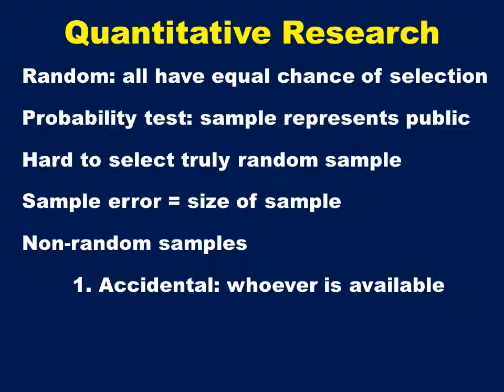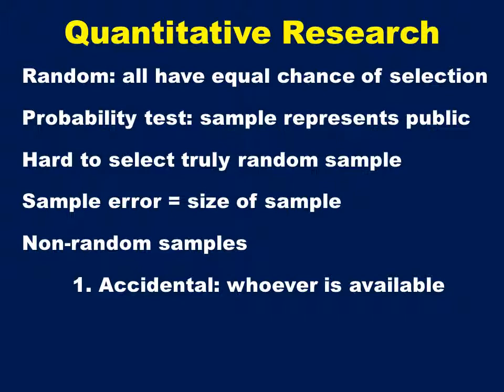One way to choose a non-random sample is a convenience or accidental sample. One might go into a classroom and survey everyone who came to class that day, or a researcher may pick every tenth person who walked through a door into a store. Another non-random sampling technique is to deliberately choose people based on their characteristics, such as choosing the first woman to walk through the entrance and then the next male to go through the door.